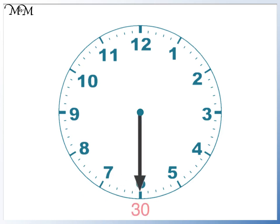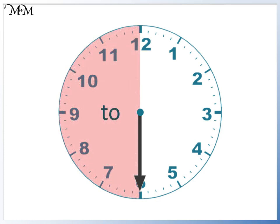25 minutes to. Apart from 12, which is 0 minutes, and 6, which is 30 minutes past or half-past, all of these numbers are minutes to the next hour.